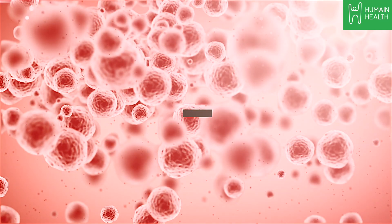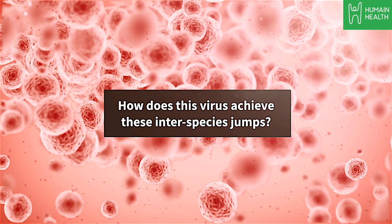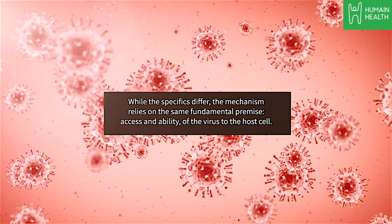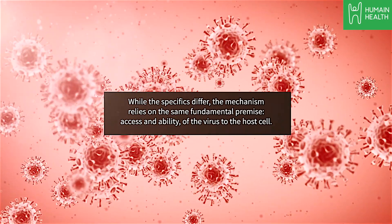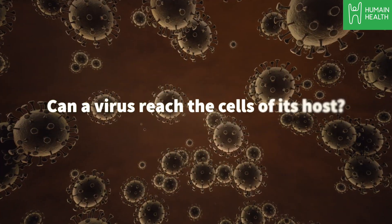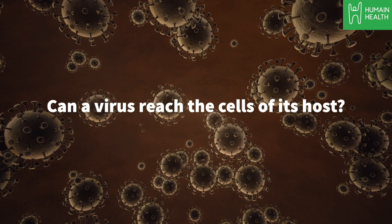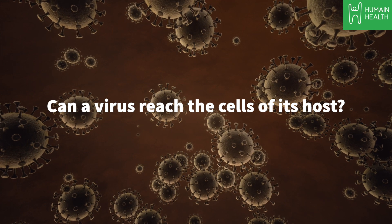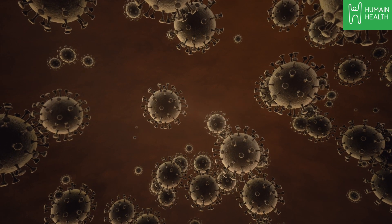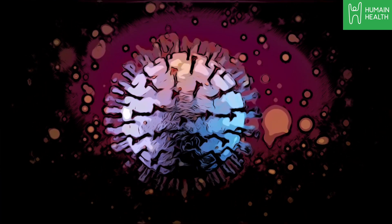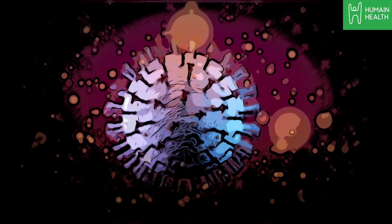How does this virus achieve these interspecies jumps? While the specifics differ, the mechanism relies on the same fundamental premise: access and ability of the virus to the host cell. Can a virus reach the cells of its host? And can the virus' proteins recognize and bind with structures known as receptors on those cells? If so, that is all it takes — the virus can now enter the cell and begin to replicate, infecting the host.